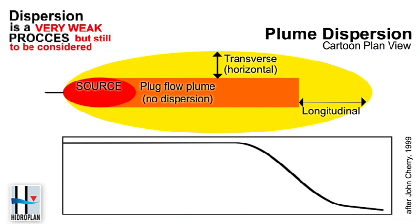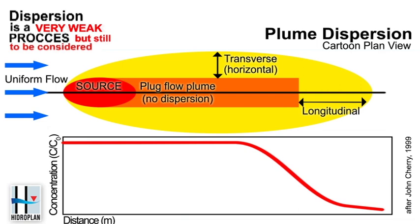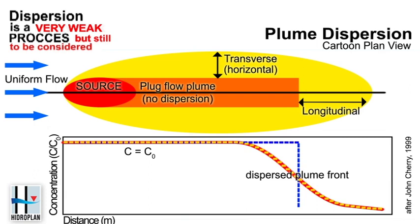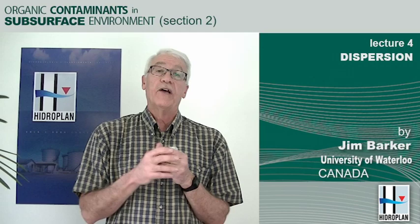We often show dispersion in a cartoon where, if we have steady groundwater flow, the plume will go wider and at the front end of the plume we'll have some dispersion. That's illustrated in the next slide, which plots concentration versus distance along the center of the plume. If the concentration at the source is steady at a value of C0, instead of that concentration going straight to the front of the plume and falling off, it goes along until near the front and then goes down and continues a little bit further — that is the dispersed front, the effect of longitudinal dispersion.